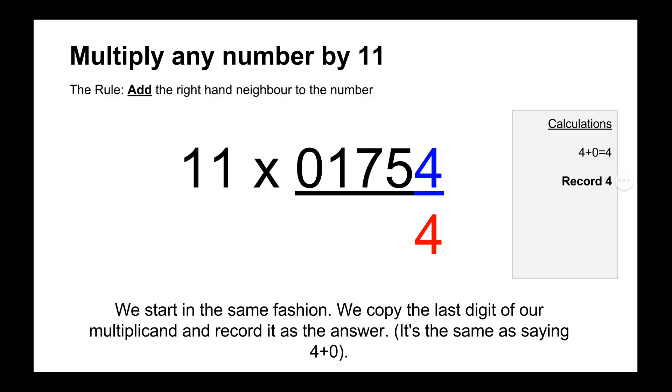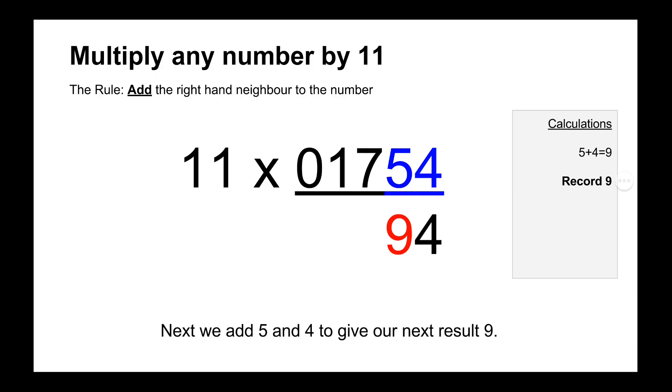And then we do our calculations. So the first digit that we use is 4, it doesn't have a neighbor so we just add 4 plus 0, and we get the answer 4, so we record the 4 shown in red. And then we move along to our next number which is 5, and we do 5 plus 4, and that gives us our answer 9.